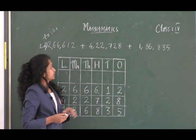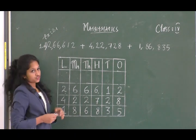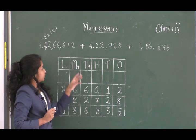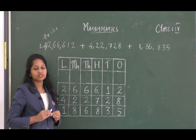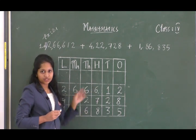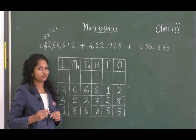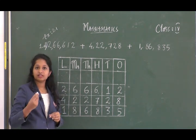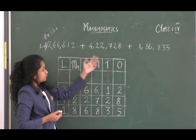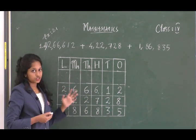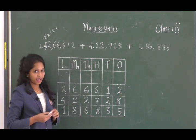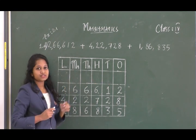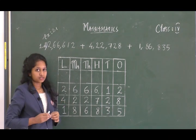Let us move on to an example from Exercise 2.1, question 1d. What you have to do is arrange the numbers in their specific places. You already know the place value chart of the Indian system — ones, tens, hundreds, thousands, ten thousands, lakhs. I have arranged those numbers in their specific columns. Now let us add. While adding you will get a carry, so the top row is meant for carry.